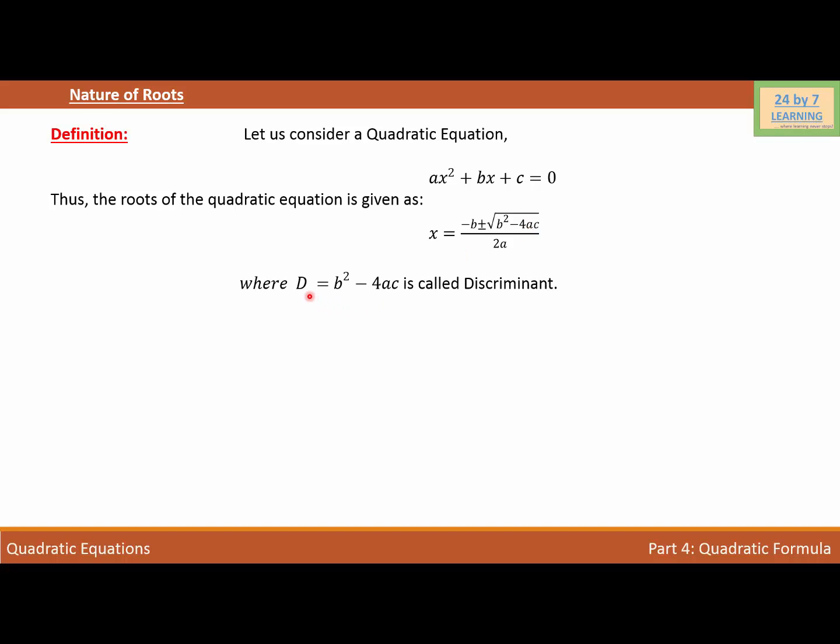Where b² minus 4ac is equal to D. So we can write D = b² - 4ac, which is called the discriminant of the quadratic equation. Now let us write this quadratic formula in terms of discriminant. This equals negative b plus minus square root of D over 2a, where D is b² minus 4ac.